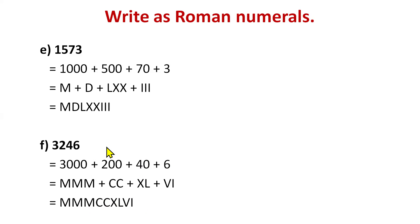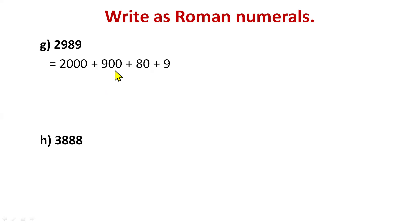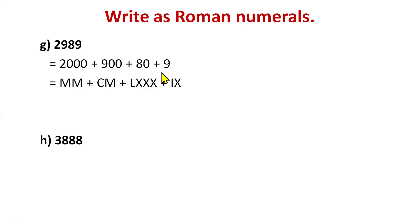One more question: 2989. Decompose: 2000 + 900 + 80 + 9. 2000 is MM, 900 takes help from 1000: CM, 80 takes help from 50: LXXX, and 9 is IX. Combine: 2989 is MMCMLXXXIX.